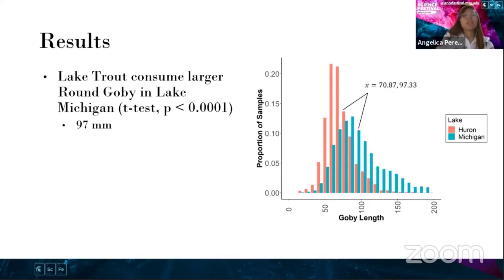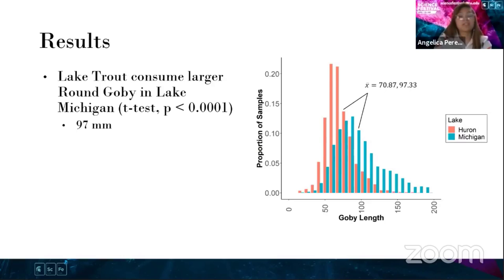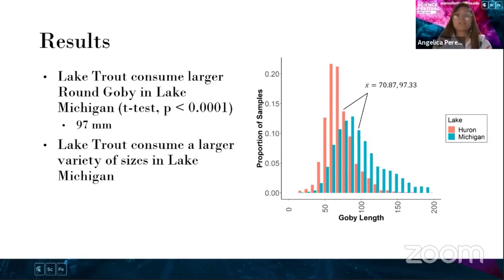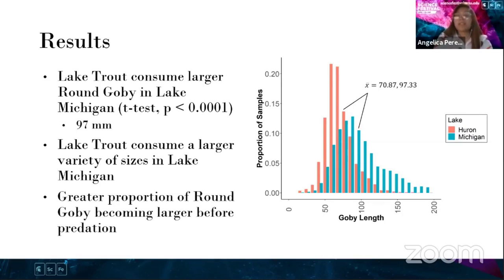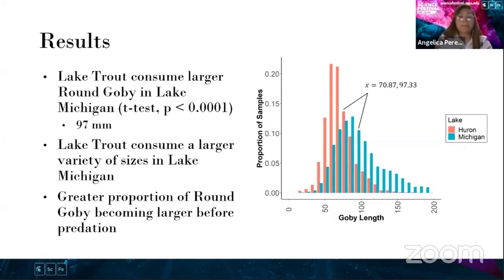In our comparison between Lake Huron and Lake Michigan, we thought that Lake Huron would have bigger round gobies due to higher benthic production. But we found that lake trout consume larger round goby in Lake Michigan, with a mean of about 97 millimeters compared to 71 millimeters in Lake Huron. This indicates that lake trout consume a larger variety of sizes in Lake Michigan, and that a greater proportion of round goby are becoming larger before predation. We see a larger presence of larger round goby in Lake Michigan, which may indicate higher productivity and that the presence of alewife may affect prey selection.